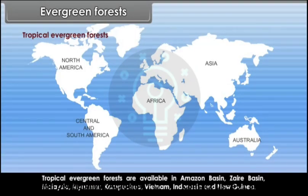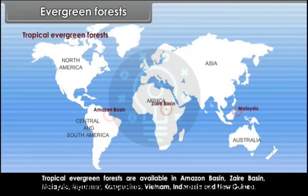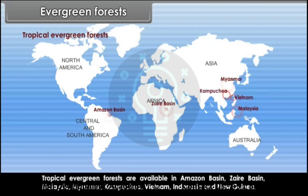Tropical evergreen forests are found in the Amazon basin, Zaire basin, Malaysia, Myanmar, Cambodia, Vietnam, Indonesia and New Guinea.